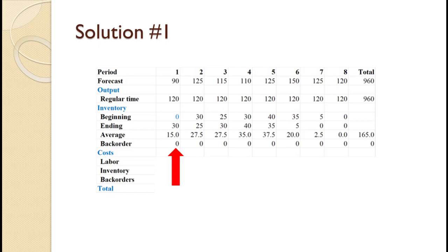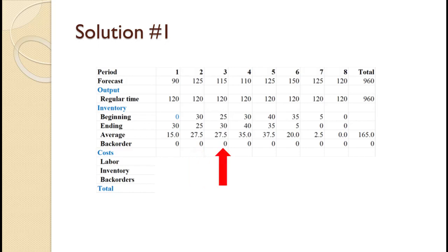Beginning inventory of zero plus production of 120 minus demand of 90 yields an ending inventory of 30 in period 1. That averages to 15. For period 2, beginning inventory of 30 plus production of 120 minus demand of 125 yields an ending inventory of 25. That averages to 27.5. For period 3, beginning inventory of 25 plus production of 120 minus demand of 115 yields an ending inventory of 30. That averages to 27.5.